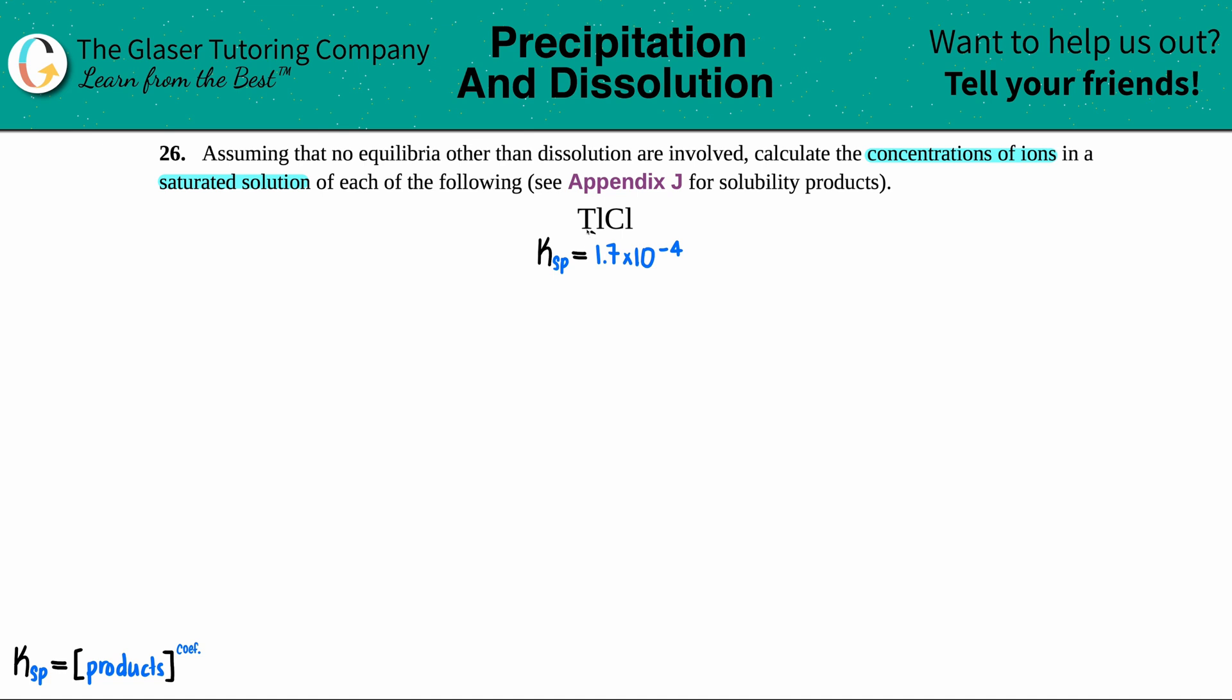What I did was I went into that appendix and I found that the solubility product, the Ksp of TlCl is 1.7 times 10 to the negative 4th. We have to write the balanced equation that breaks down the TlCl into its ions. So here we go. TlCl solid - with Ksps, they always start with a solid.